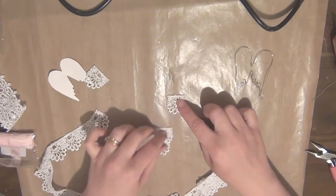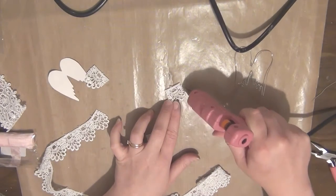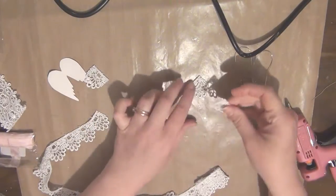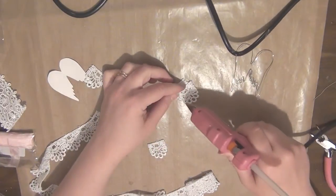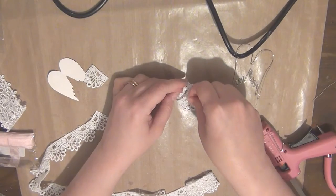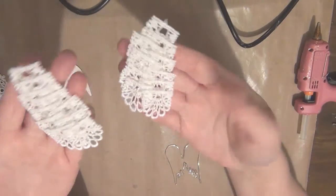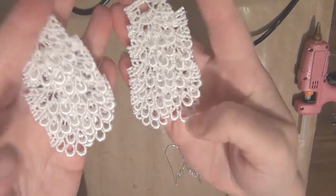Then I'm going to take my lace. This lace is scalloped so I thought it would be really cool to make this look like feathers. I'm cutting out the segments of the lace and then I'm just gluing them together. I ended up creating two pieces, one for each side of the wing.